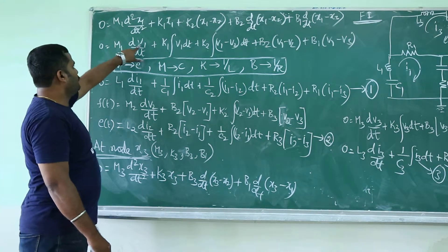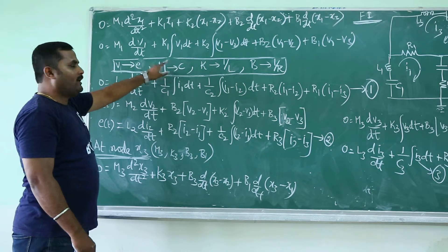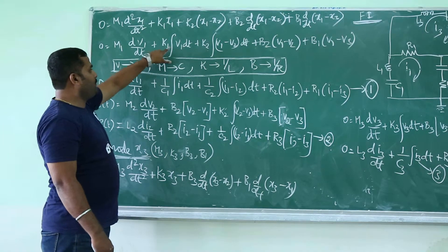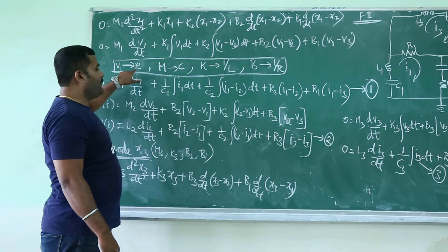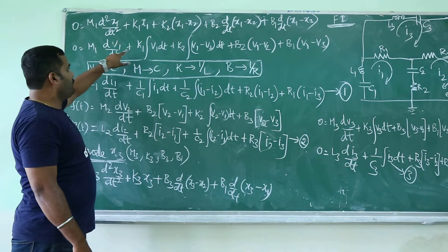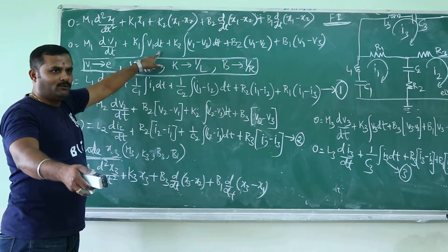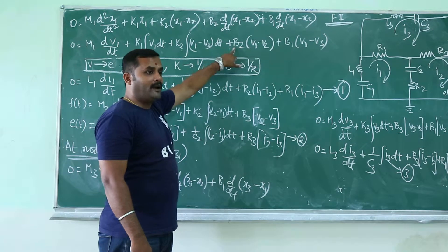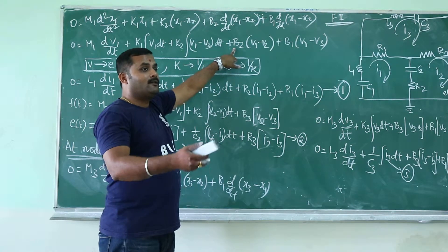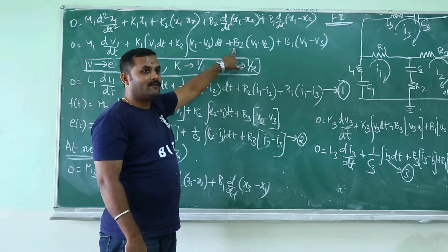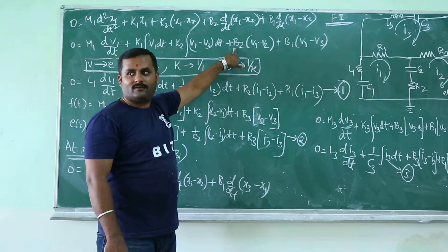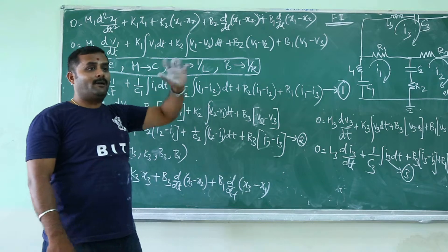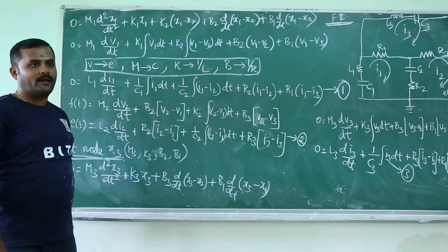Now V is replaced with E, and M is replaced with C. When I say C into dE by dt, is it not current through the capacitor? K is replaced by 1 by L — so 1 by L integration of E dt is nothing but current through the inductor. Similarly, B is replaced by 1 by R, because current through the resistor is I equals V by R, therefore B should be replaced by 1 by R. This is how you remember the replacement of the components without looking into the table.